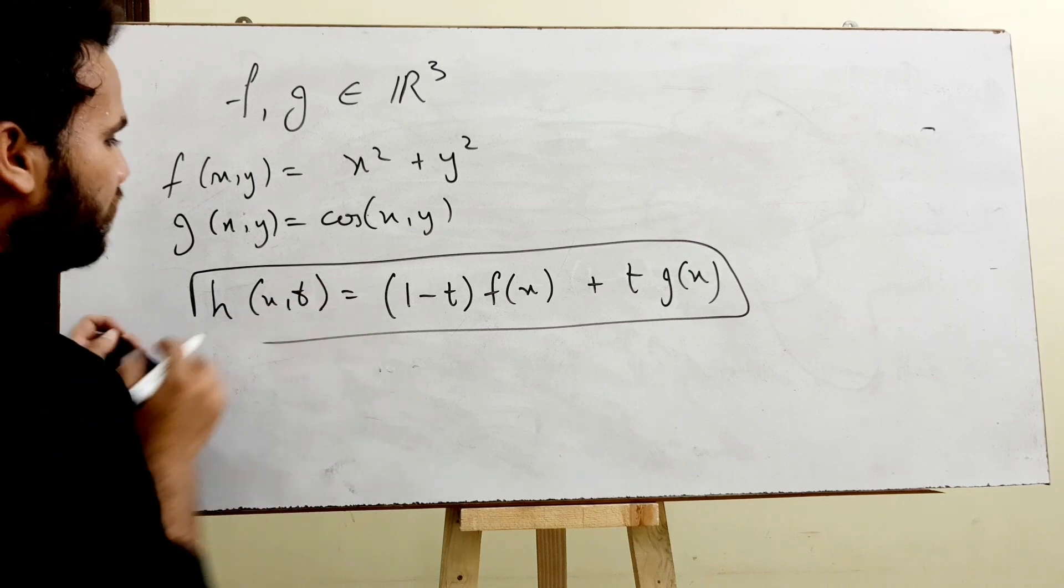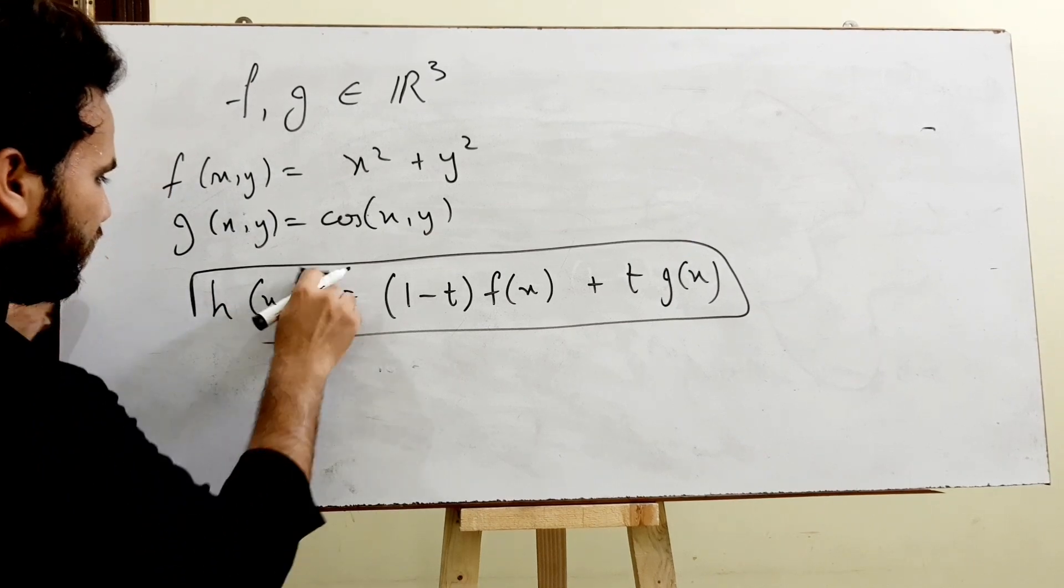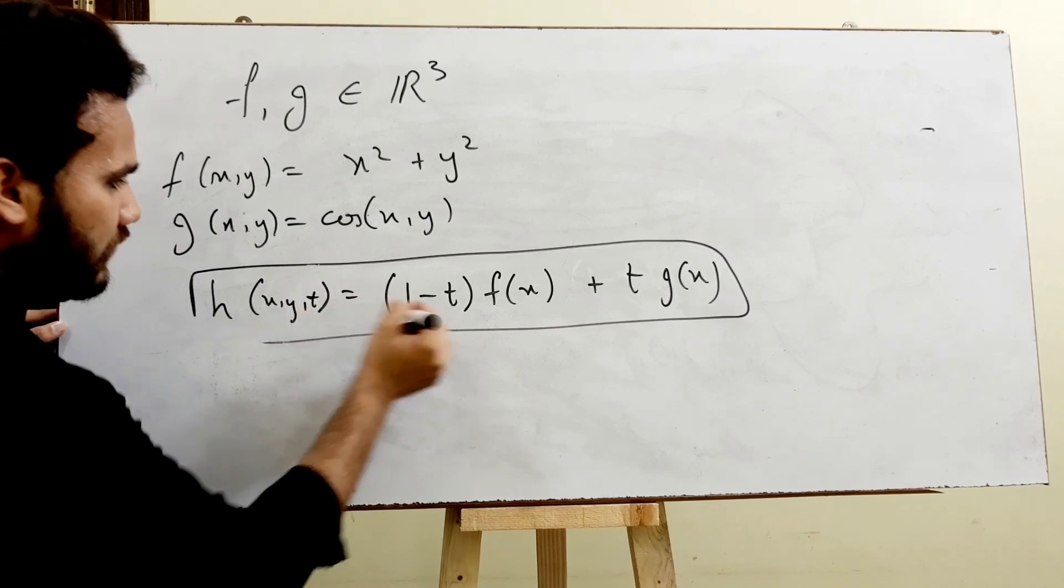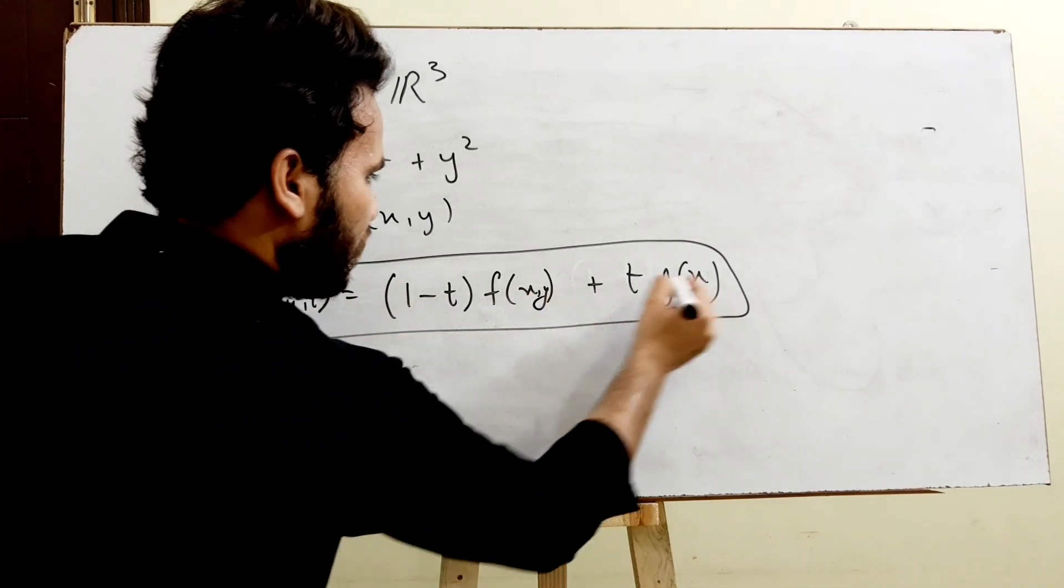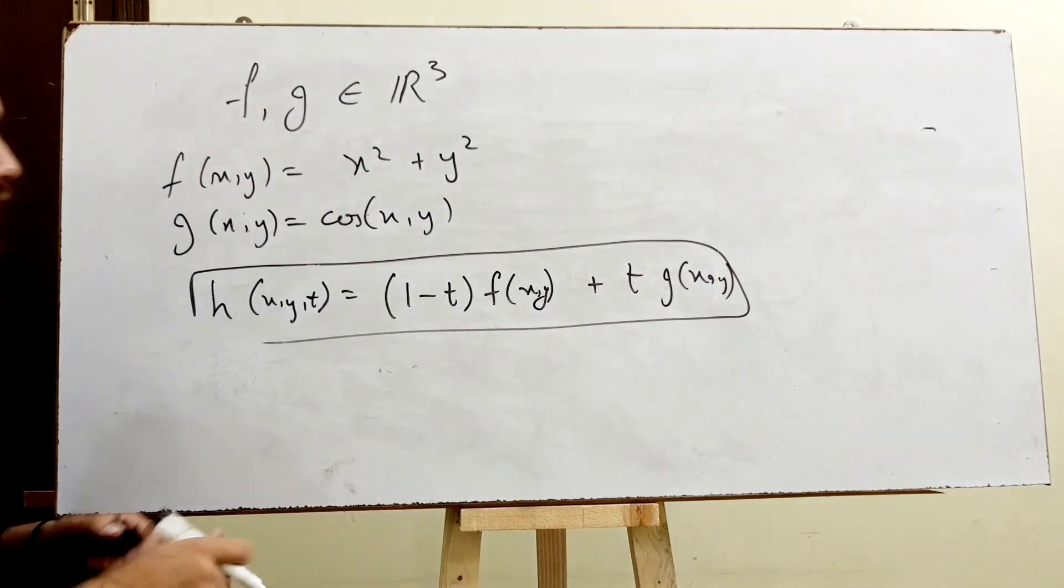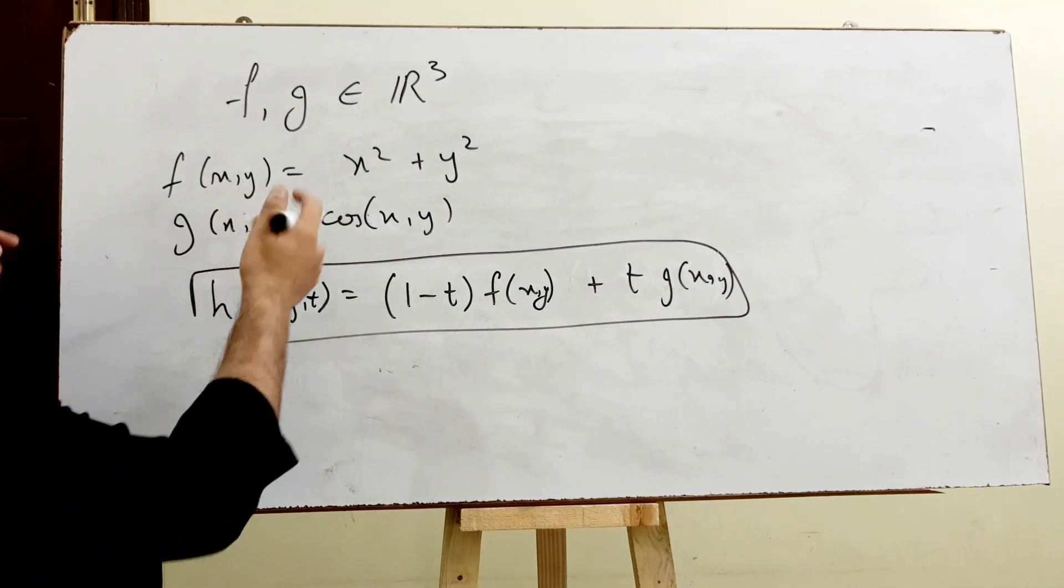This can be written as (x, y, t), and here (x, y), and here again (x, y). So this is another example of homotopy.